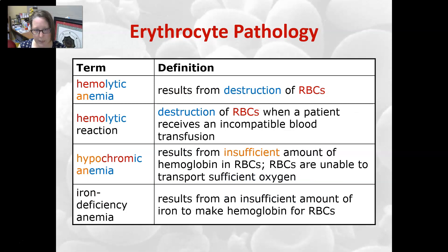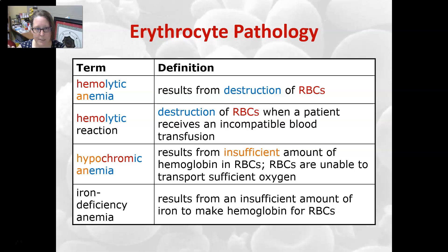Hemolytic anemia is an anemia — a lack of red cells and/or hemoglobin — that results from the destruction of red cells. Hemolysis means hemo (blood) and lysis (destruction or rupturing of the blood cells). A hemolytic reaction is the destruction of red cells when a patient receives an incompatible blood transfusion.